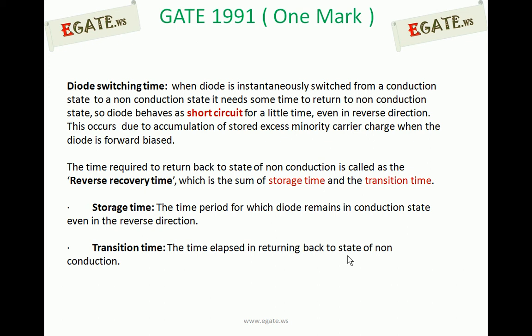In the diode, there will be a very large number of excess minority carriers stored under forward bias when it is in steady state. To make the diode go towards reverse bias, the first step is to remove that excess minority carrier charge so that it comes into open circuit condition, and later it comes into reverse bias condition. So two things must happen: first, removal of excess minority carriers; second, making the reverse bias achieve steady state condition.